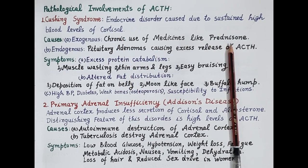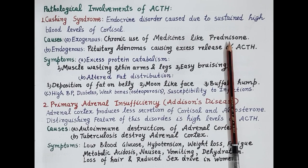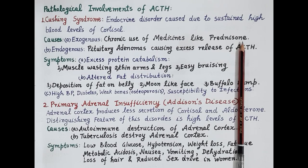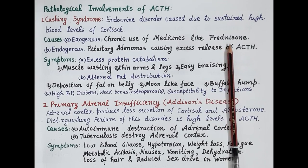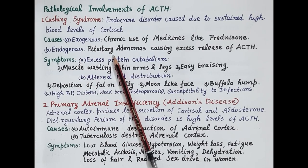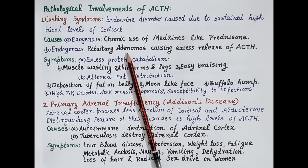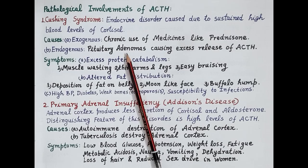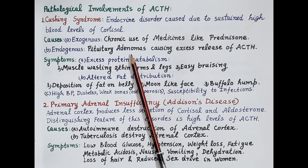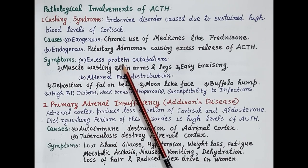The reasons for high cortisol levels could be exogenous or endogenous. Most of the time, high cortisol levels are produced because of chronic administration of drugs like prednisone. Since prednisone is a synthetic glucocorticoid that mimics the action of cortisol, long-term administration in patients — for example, in organ transplantation — can cause Cushing syndrome. Another reason could be endogenous, such as pituitary adenomas — benign tumors of the pituitary gland that produce excess ACTH, which further causes excessive secretion of cortisol.